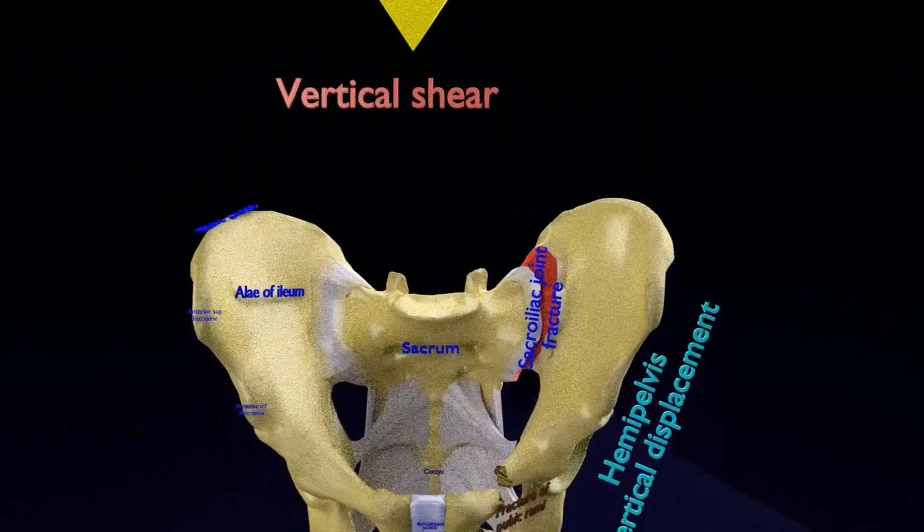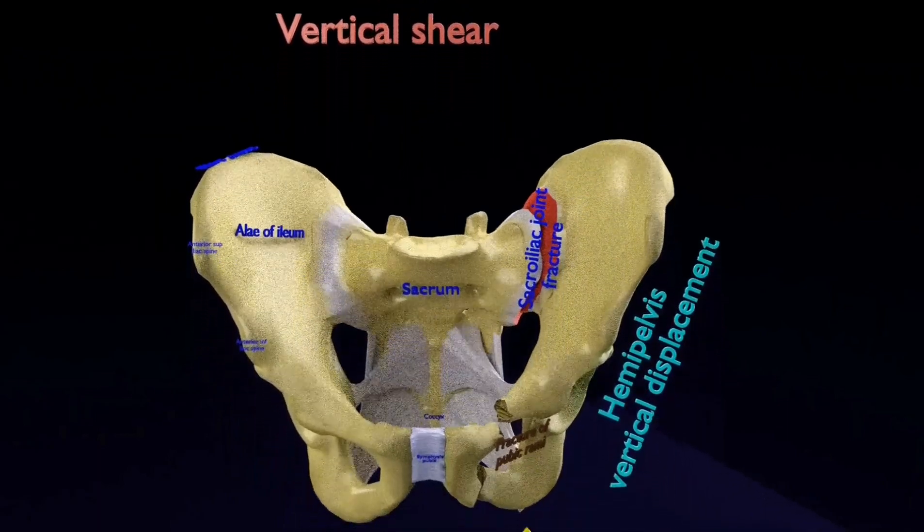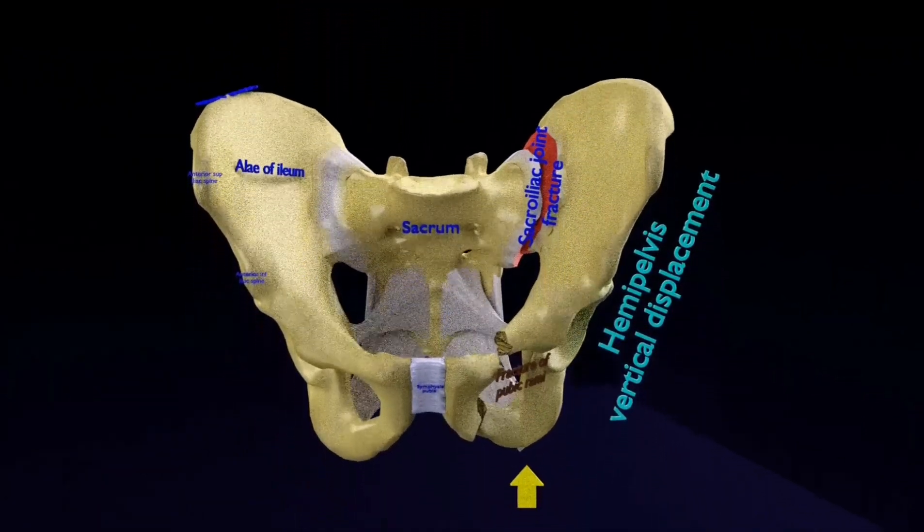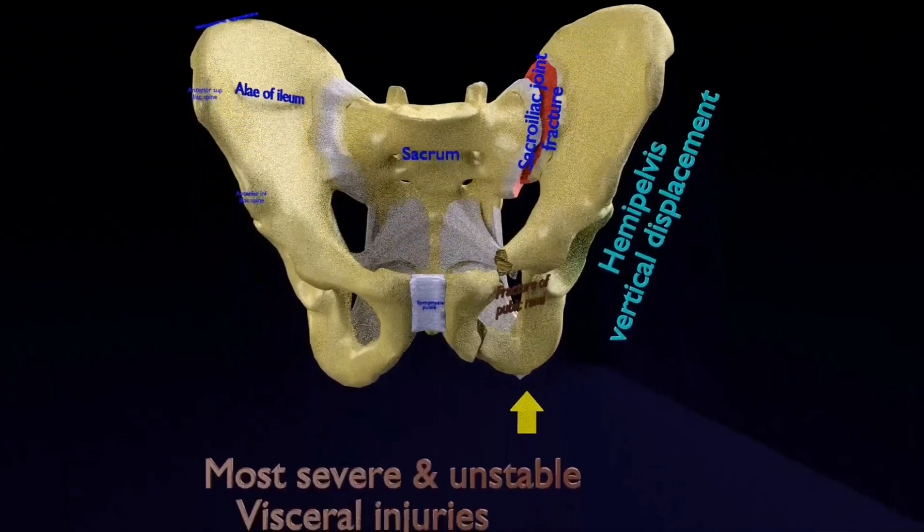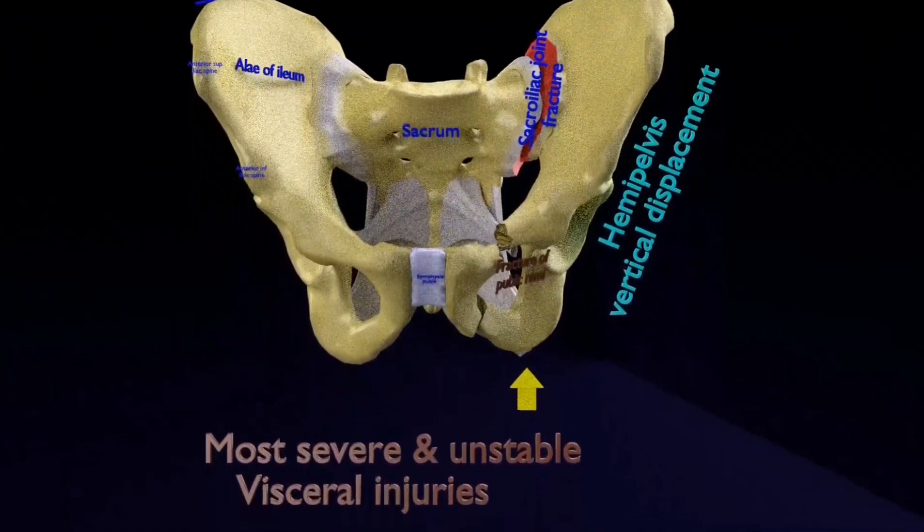Pelvic ring is disrupted with both anterior pelvis injury, pubic rami, and ipsilateral posterior pelvis injury, sacrum, SI joint, iliac ring.